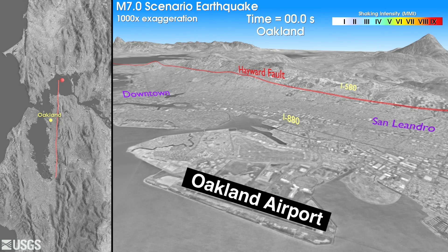To help orient you, we're looking at the ground movement of the bay from a vantage point over the Oakland airport. The ground movement you see is exaggerated a thousand times to clearly show the shaking.